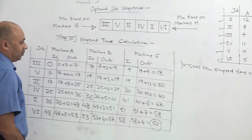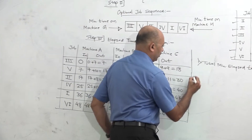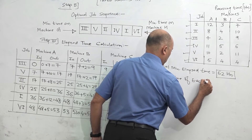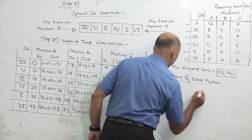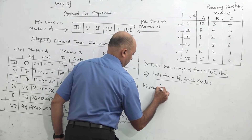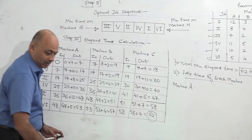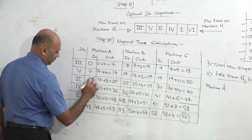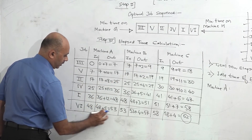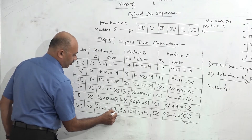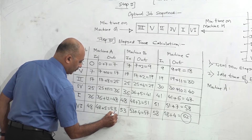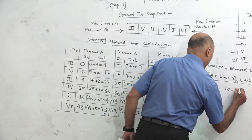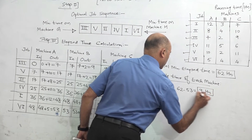Total minimum elapsed time is 62 hours. Now we calculate the idle time for each machine. Machine A runs continuously from 0 to 53, then stops. Total time is 62, so machine A is idle from 53 to 62, which is 9 hours.